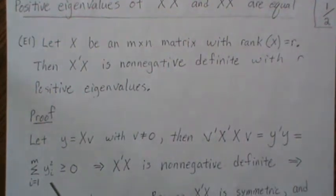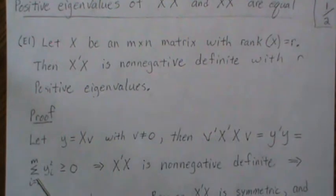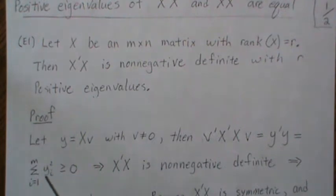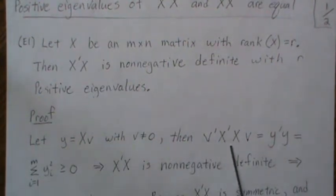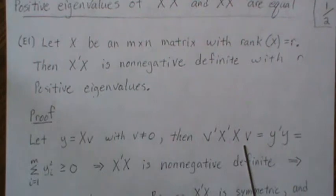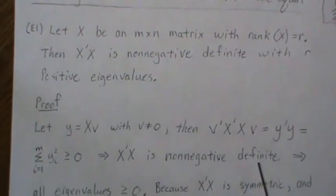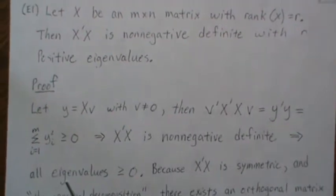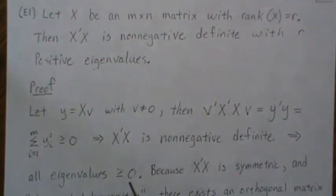But this is the sum of Y_i squareds. This is a vector and this is a vector, so it can be thought of as each component squared. Because it's the sum of squared items, it has to be greater than or equal to zero. This implies that since we chose V arbitrarily, it could be any vector, X prime X is non-negative definite, which implies all the eigenvalues are greater or equal to zero.